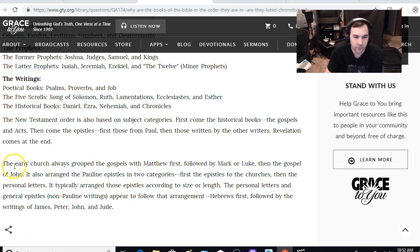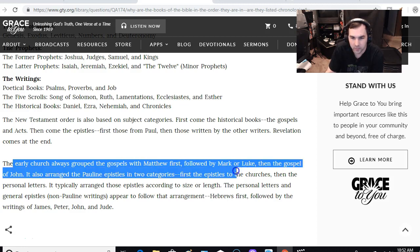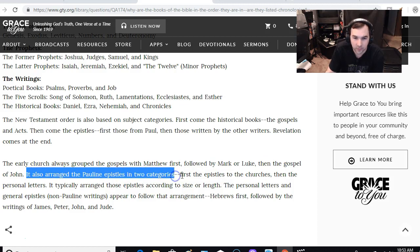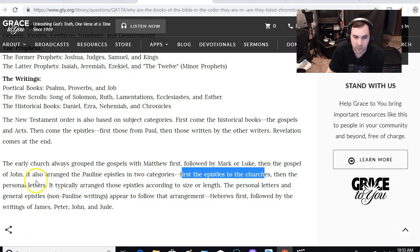It says the early church always grouped the Gospels with Matthew first, followed by Mark, Luke, then the Gospel of John. It also arranged the Pauline epistles in two categories, first the epistles to the churches, then the personal letters, then it typically arranged those epistles according to their size or length. The personal letters and general epistles, the non-Pauline writings appear to follow that arrangement, Hebrews first, followed by the writings of James, Peter, John, and Jude. So usually the larger epistles first, and then the smaller ones, the Pauline ones first, and then the non-Pauline ones, generally.